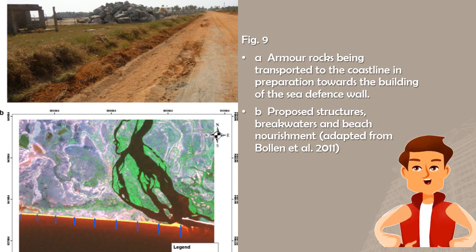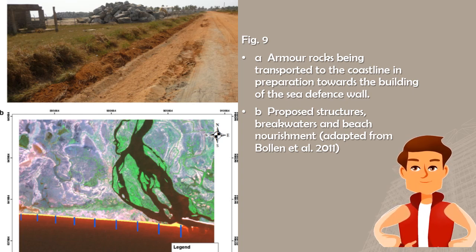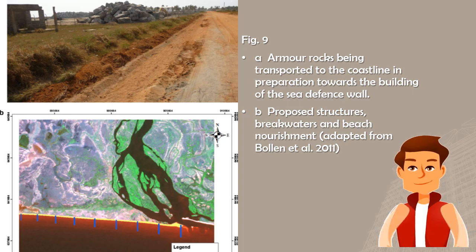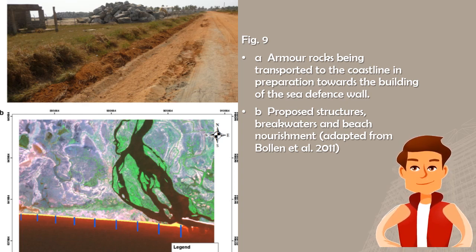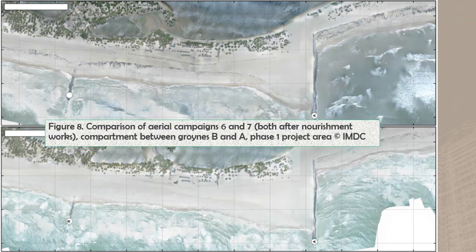Figure 9 shows two types: figure A shows armor rocks being transported to the coastline in preparation for building the sea defense wall, which acts as a sea protection structure. Figure B shows proper structures including breakwaters and beach nourishment, adapted from Bolland et al. 2011. Another figure shows a comparison of area campaigns 6 and 7, illustrating nourishment works in a compartment between groins B and A, which is one phase of the two-phase Ada Sea Defense Project.